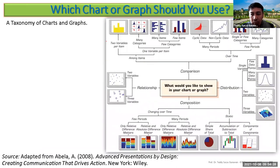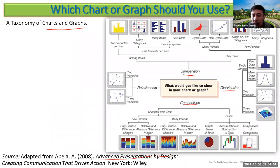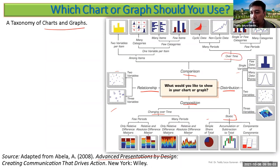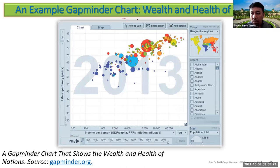A useful taxonomy of charts and graphs helps select the right visualization. First ask: what do you want to show — comparison, composition, distribution, or relationship? For single-variable distribution, use a histogram. For composition over time, choose between static and dynamic views, or percentage representation. For comparison over time, consider few versus many periods and the number of variables.